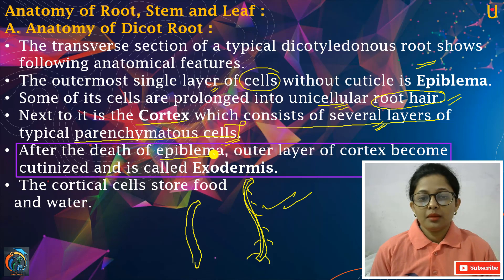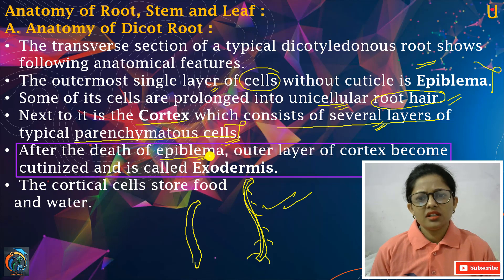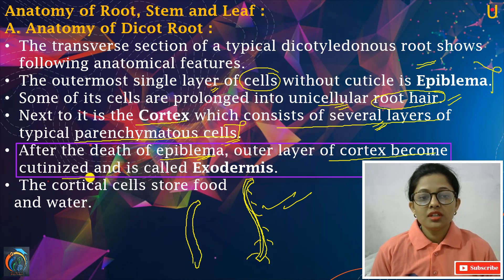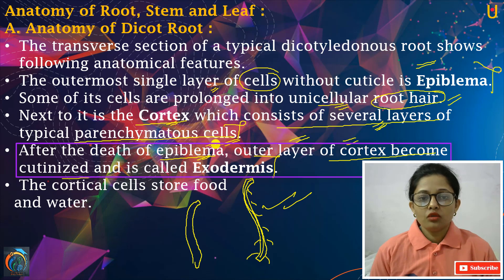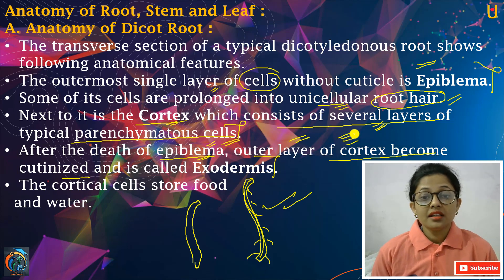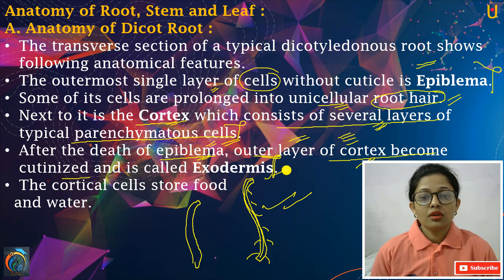After the death of epiblemma, what happens? The outer layer, epiblemma, which undergoes death in any condition. Outer layer of cortex becomes cutinized and is called exodermis. Ab cortex jo inner layer thi, woh outer layer ki tarah work karne lagti hai. Epiblemma jo outer layer thi, iski death hoti hai kisi bhi condition mein. Toh ab outer layer ki tarah kaun work karega? Cortex layer work karegi, isliye phir hum isse kya bolte hain — exodermis.